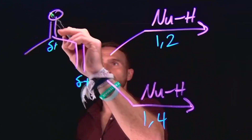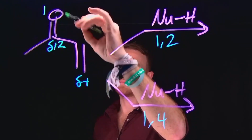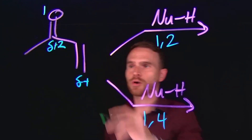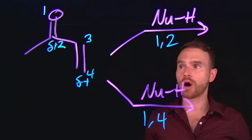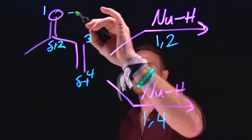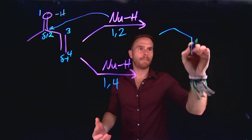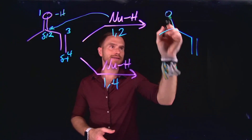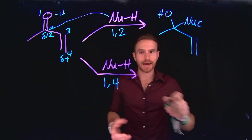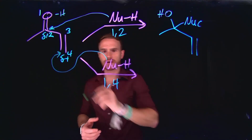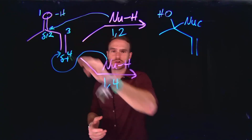It's useful to assign numbers to determine what type of addition is occurring. If we start at the more electronegative atom, oxygen, that would be position one, the carbonyl carbon would be position two, this carbon would be position three, and this carbon would be position four. Therefore, a 1,2 addition is going to place a hydrogen at oxygen and the nucleophile will attack at the carbonyl carbon. This is called a 1,2 Michael addition. It leaves the alkene intact and produces a brand new quaternary carbon, which could potentially be a stereocenter.